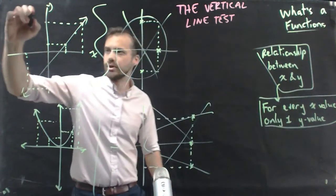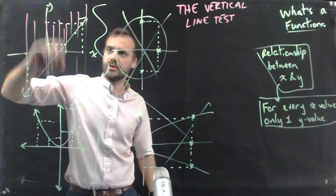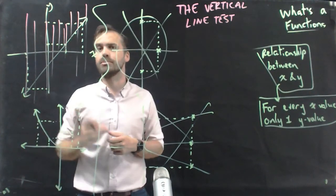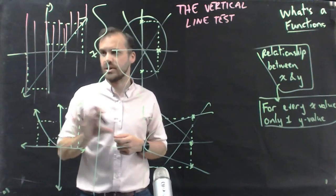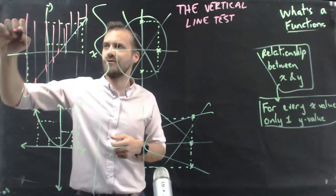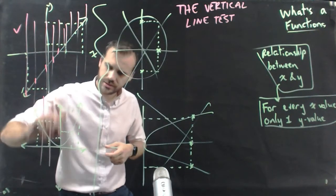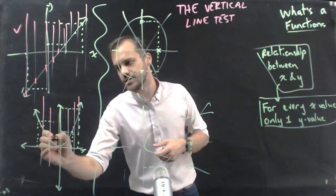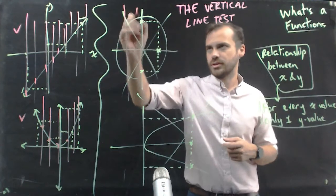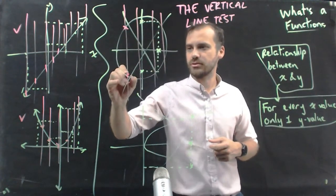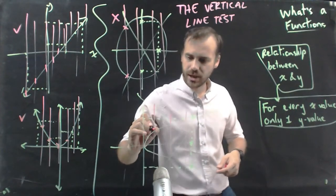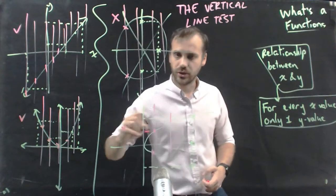And it's very, very simple. Draw heaps of vertical lines — heaps of them. If any of those vertical lines pass through the relationship more than once, that thing is not a function. If we look at all of these vertical lines, we can see it's only going to pass through the straight line once — function. If we draw vertical lines through the quadratic, it's only passing through the relationship once — function. If I draw a vertical line through the circle, anywhere, it's passing through the relationship twice — not a function. And here, if I draw a vertical line through the sideways parabola, we can see it's passing through the relationship twice — not a function.